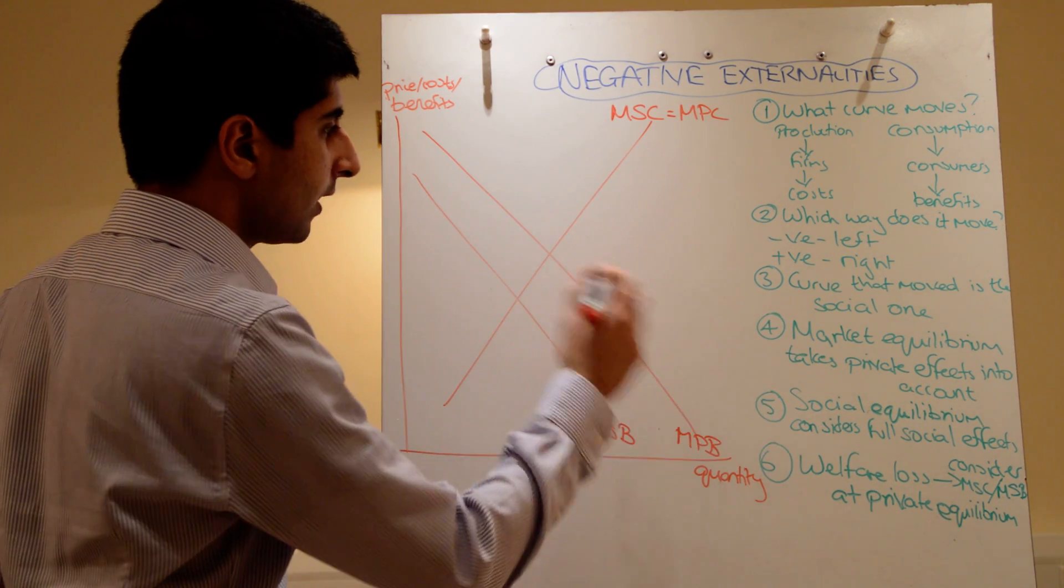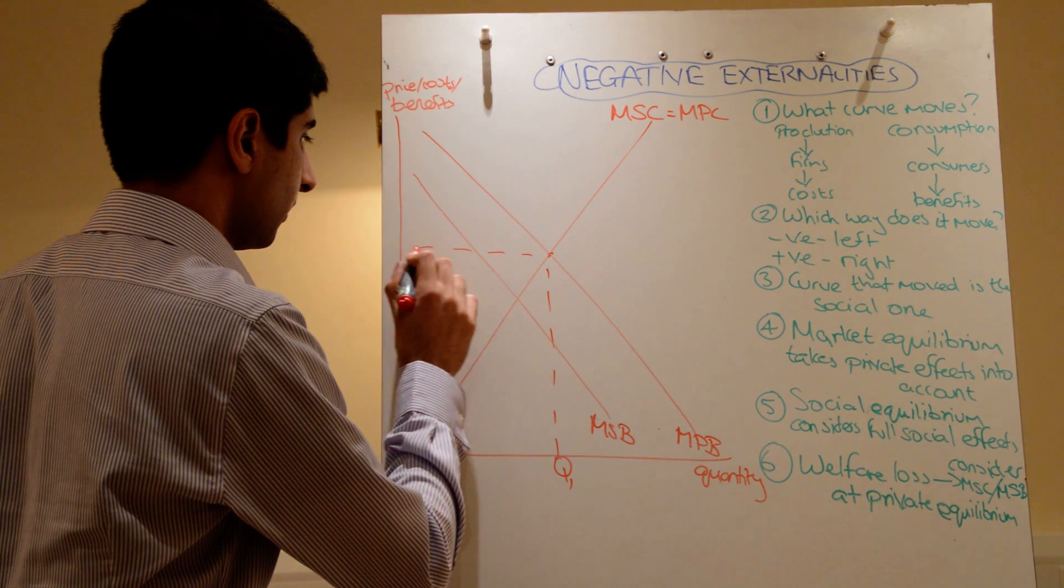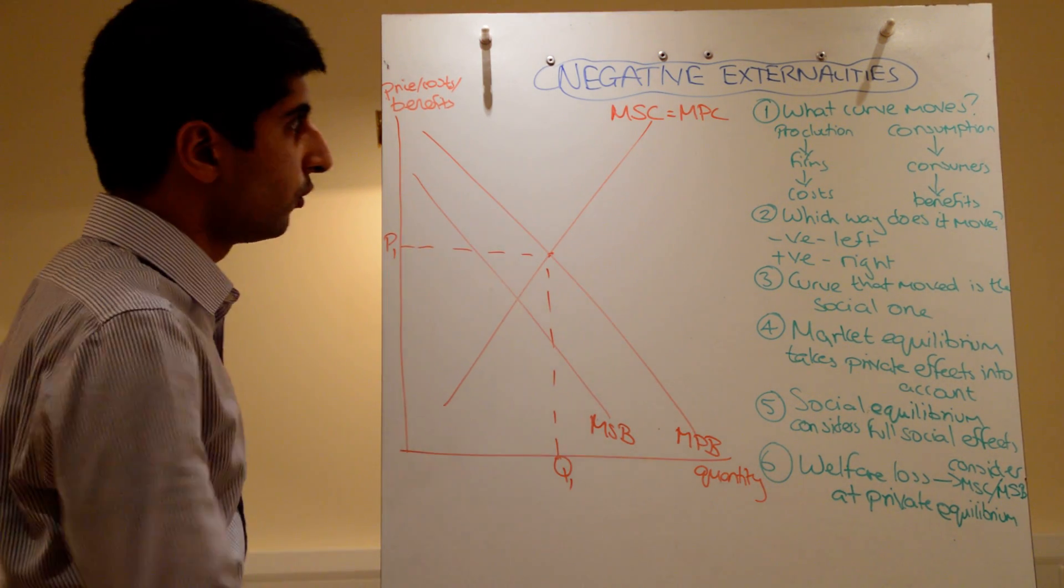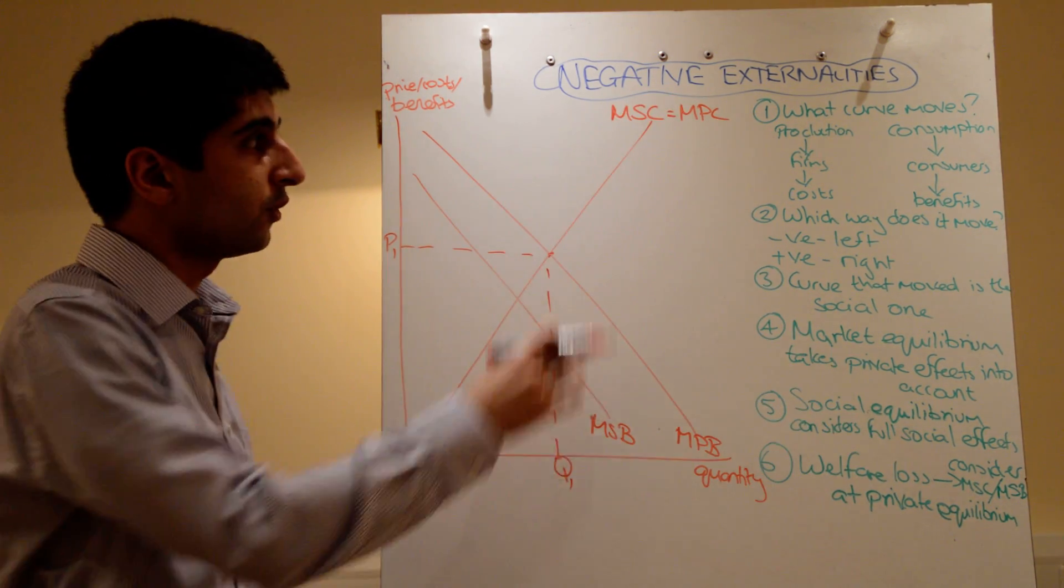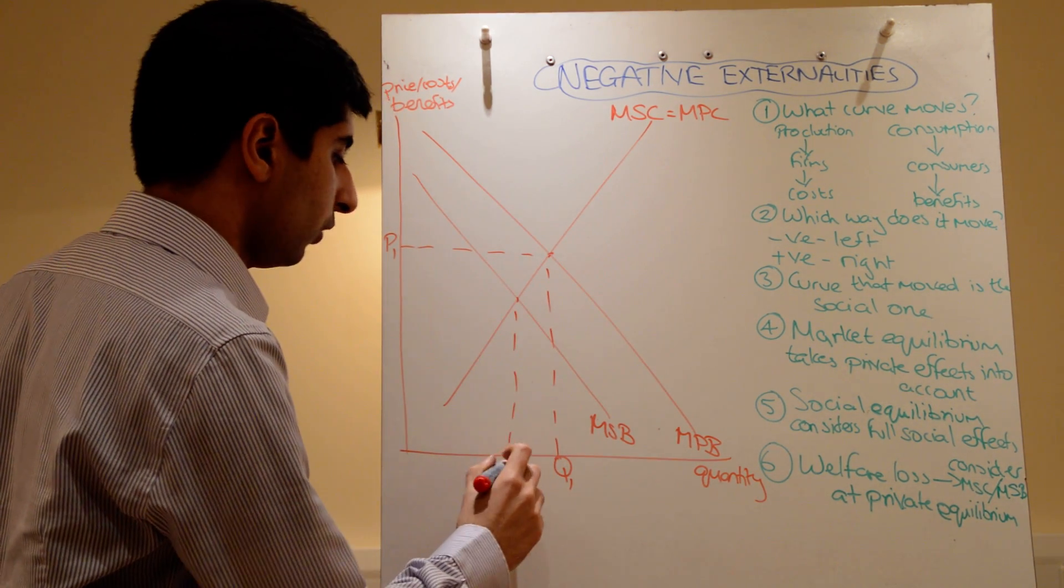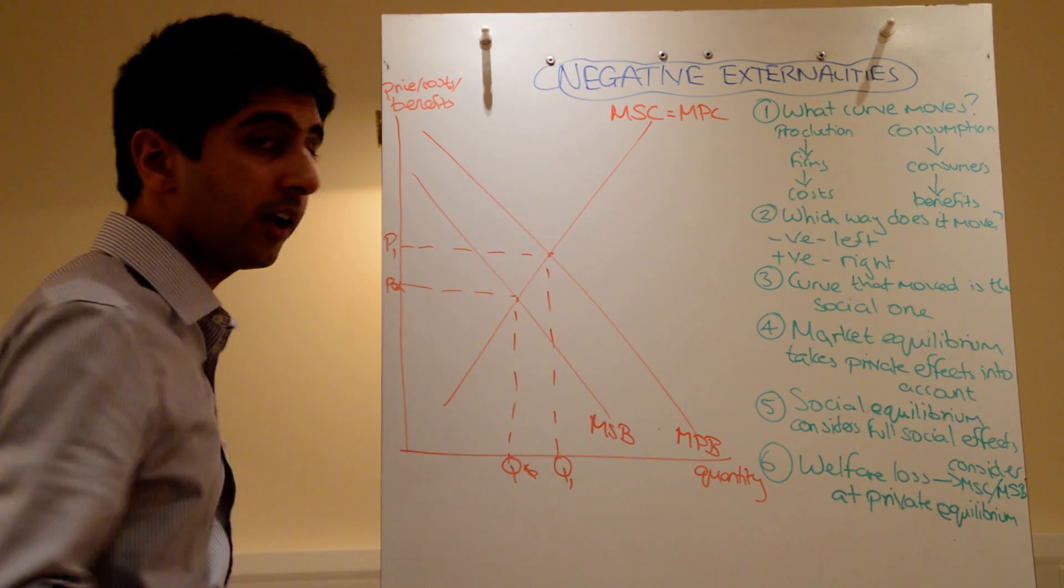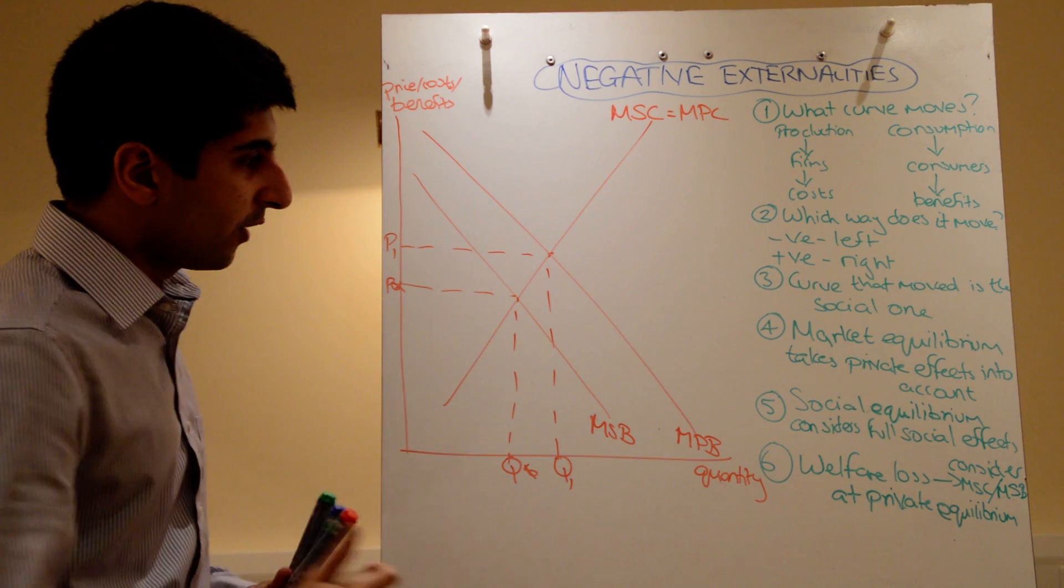Now, the market equilibrium only considers the private effects. So the private benefits and the private costs. In truth, the private costs are the social costs, assuming no production externalities here. But the social optimum takes into account the full social effects. So I'll label that P star and Q star to indicate what society would like.